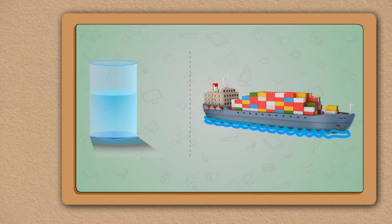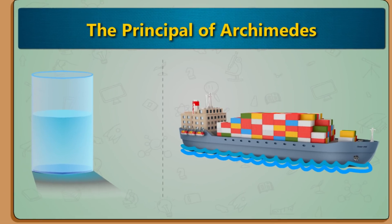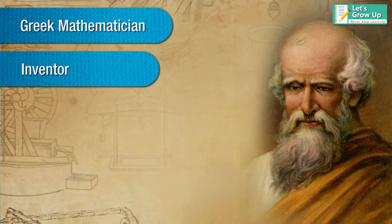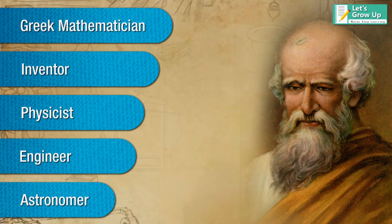Today's lesson is very interesting and important. In this topic we will learn about the principle of Archimedes. Archimedes of Syracuse was an outstanding ancient Greek mathematician, inventor, physicist, engineer, and astronomer. Although not much is known about his life, he is considered one of the most eminent scientists and mathematicians of the classical era.